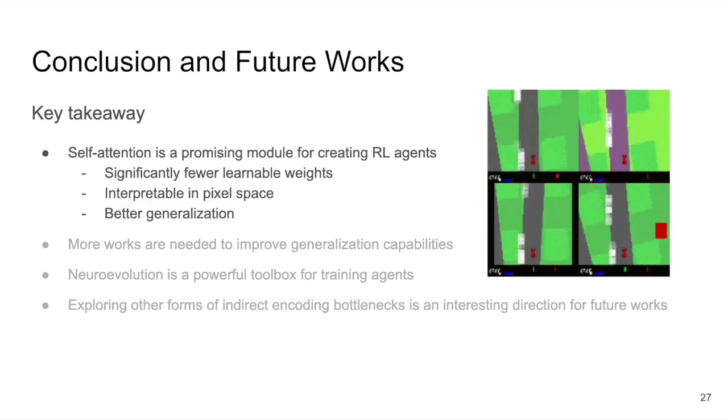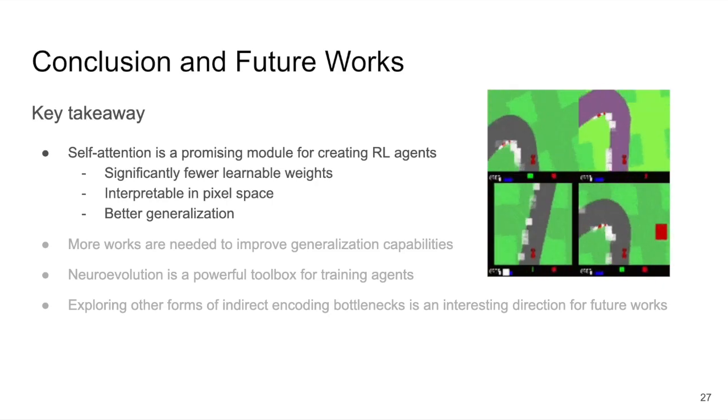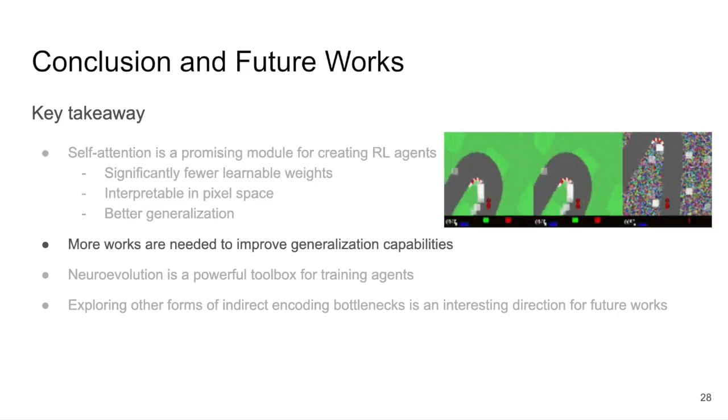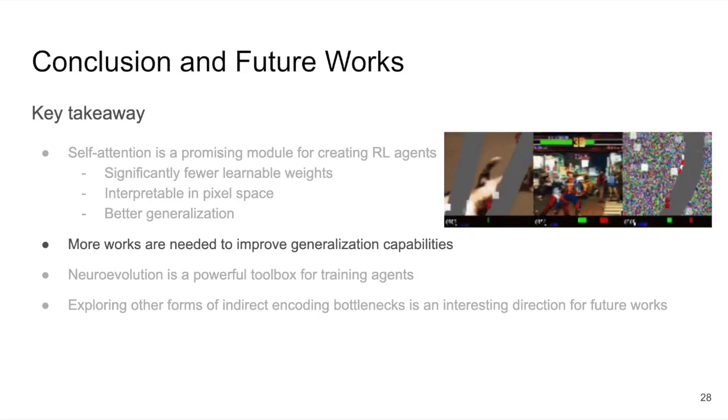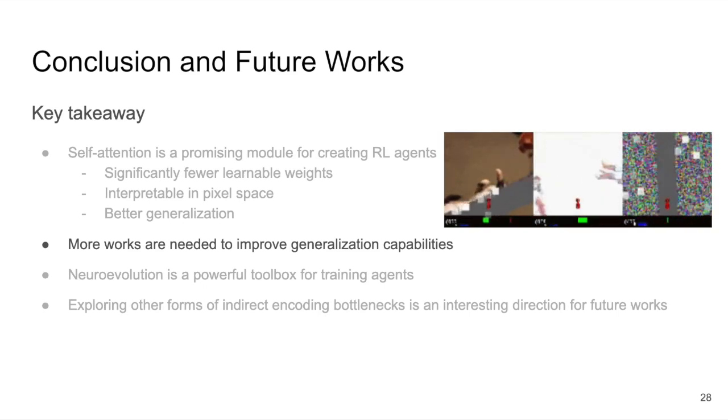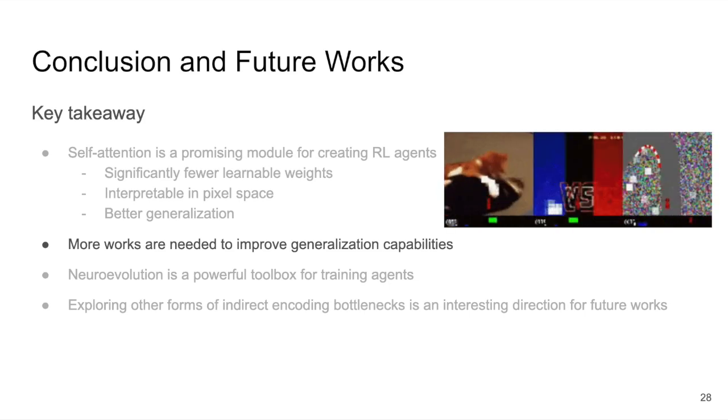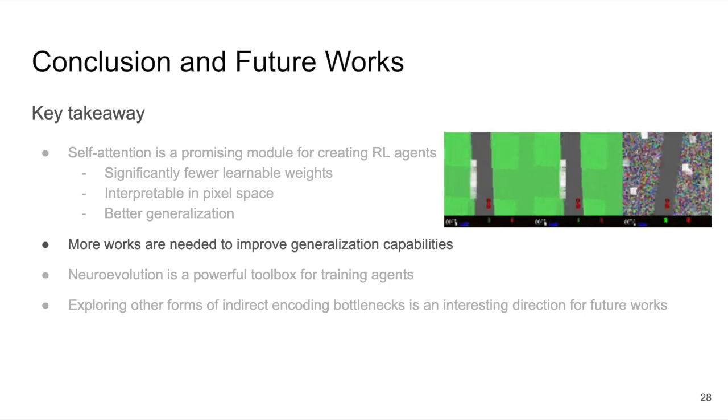We demonstrated that self-attention is a powerful module for creating RL agents that is capable of solving challenging vision-based tasks. With the self-attention information bottleneck, the agent can have several good properties, among which the major ones are having significantly fewer learnable weights, being interpretable in the pixel space, and the agent generalizes better than conventional methods. With that being said, our agent is nowhere close to the generalization capabilities of humans. The simplistic design choices we made in this paper is not sufficient to solve more complicated tasks. How we can learn more meaningful features and perhaps even extract symbolic information from the visual input will be an exciting future direction.